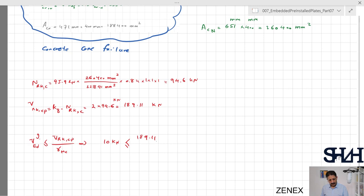10 kilonewtons needs to be less than 189 divided by 1.5 which is 126, and utilization ratio we determine 10 kilonewtons divided by 126 kilonewtons equals 7.9 percent.